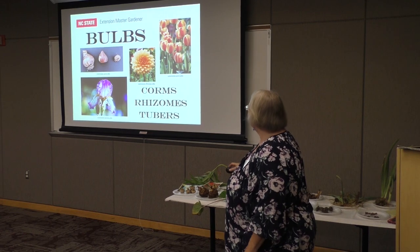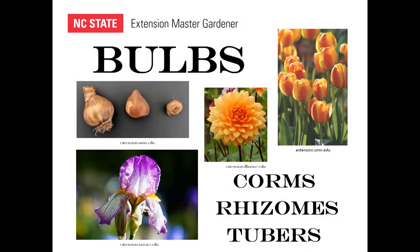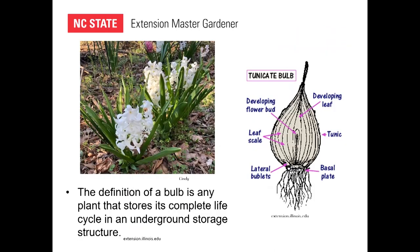We're going to talk about all different kinds of things: bulbs, corms, and more. Everybody recognizes tulips, iris, in all different forms and shapes. I love this definition: any plant that stores its complete life cycle in an underground storage structure — that is what a true bulb is. Doing this research, you go through and find that something called a bulb isn't really a true bulb — it's a corm or a rhizome.